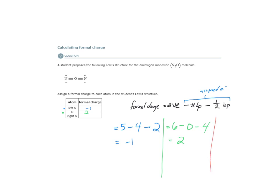Let's look at the right nitrogen atom. The formal charge is going to be equal to the number of valence electrons, which is five, minus the number of lone pairs: one, two, three, four — that nitrogen atom is assigned all of those, as they're not involved in any covalent bonding. Minus half of the bonding pairs of electrons, which is two. So five minus four is one, minus two is negative one. We again end up with a formal charge of negative one.